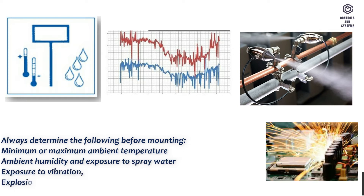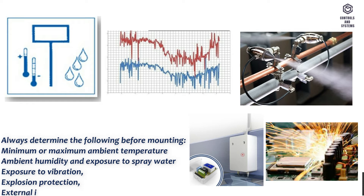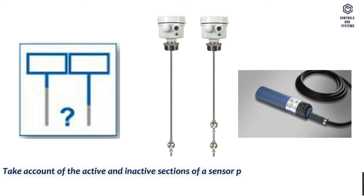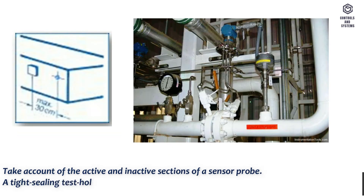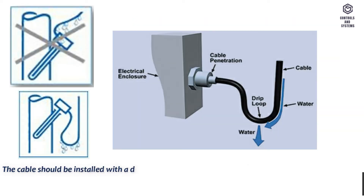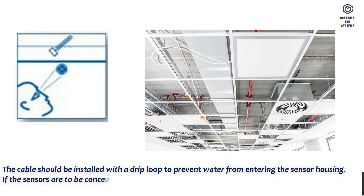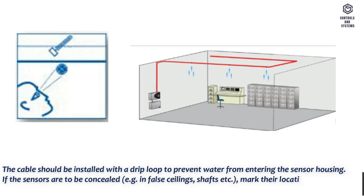Always determine the following before mounting: minimum or maximum ambient temperature, ambient humidity, exposure to spray water, exposure to vibration, explosion protection, and external influences. Take account of the active and inactive sections of a sensor probe. A tight ceiling test hole must be provided adjacent to every sensor. The cable should be installed with a drip loop to prevent water from entering the sensor housing. If the sensors are to be concealed — for example, in false ceilings or shafts — mark their locations visibly and record them in the site documentation.